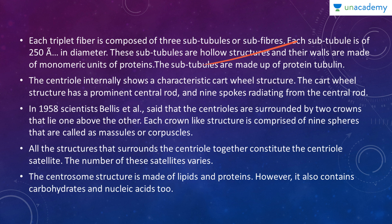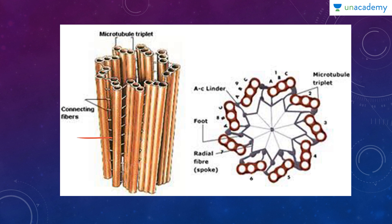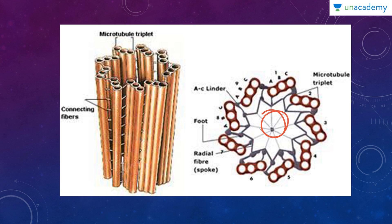To summarize the structure: the centriole is found in a 9+3 arrangement, is microtubular, cylindrical, and both bundles are present perpendicular to each other. Looking at the diagram, these are the microtubule triplets — three in each, and nine total. Each triplet is connected to the next by connecting fibers. The triplet consists of the A, B, and C sub-tubules, and each A tubule is connected to the C of the adjacent triplet via an A-C linker. The radial fiber connects the central axis to the triplets.